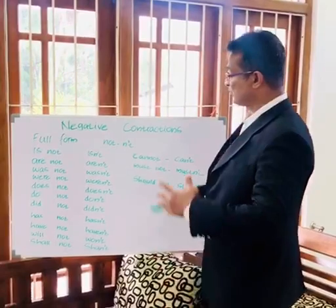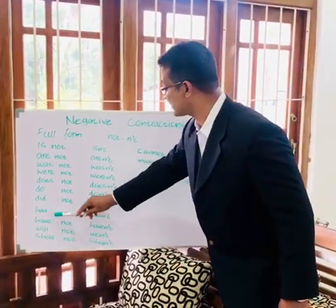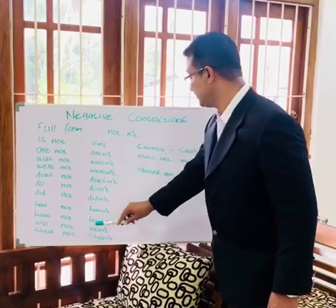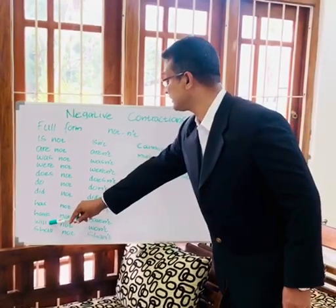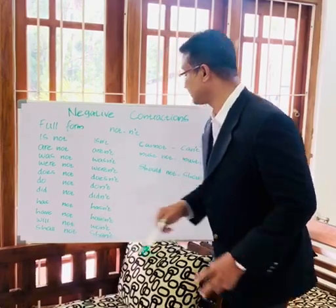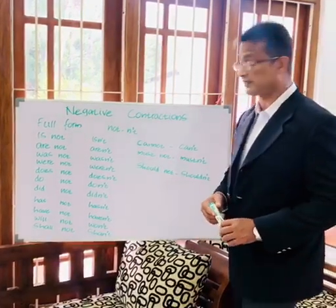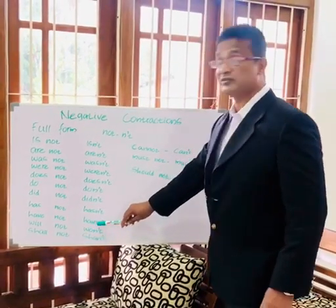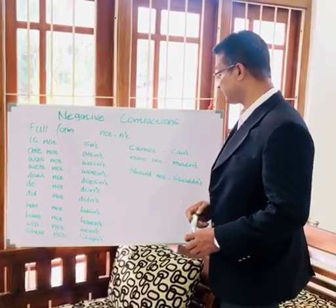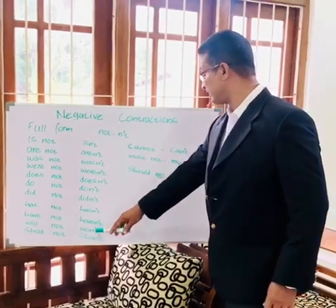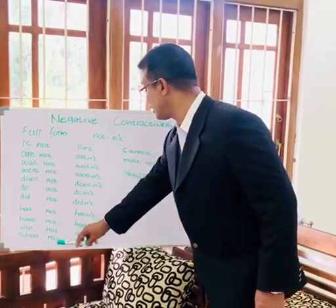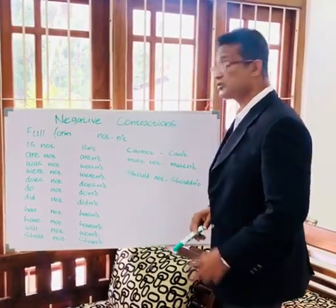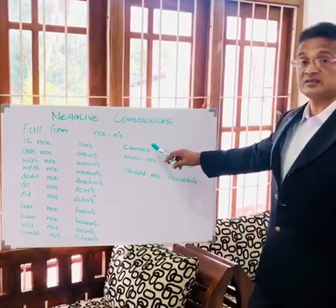It's almost the same when it comes to has not — it becomes hasn't — and have not becomes haven't. The particular thing here is with future forms: will not becomes won't — that is W-O-apostrophe-T — and shall not becomes shan't — that is S-H-apostrophe-T.